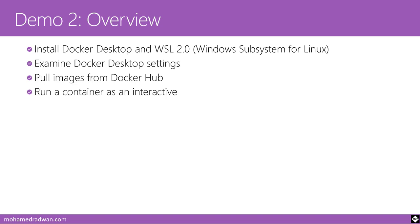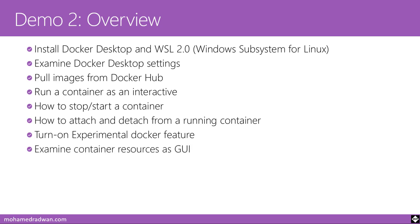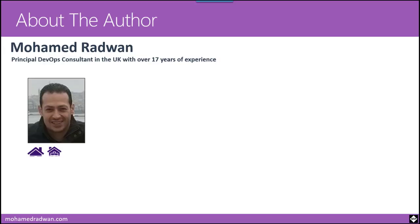The main idea here is to show you that we have almost the same experience on Windows as on Ubuntu or Linux. After that we will stop and start a container, attach and detach from a running container, turn on the experimental Docker feature which is only supported on Windows, and examine container resources in the GUI, which is only available on the Windows platform.